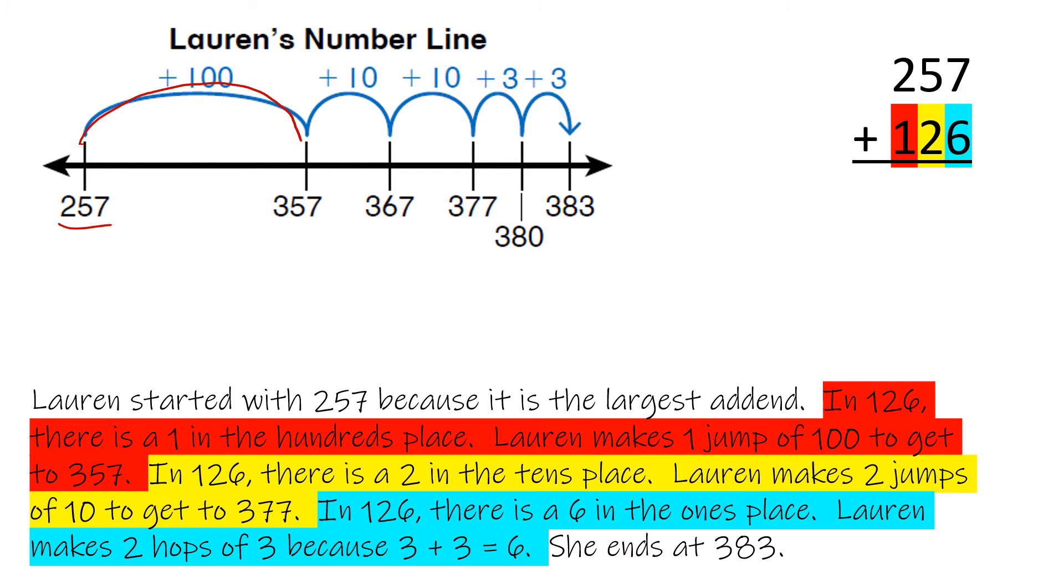So Lauren makes one jump of 100 to get to 357. In 126, there is a 2 in the tens place. Lauren makes two jumps of 10 to get to 377. And in 126, there is a 6 in the ones place.